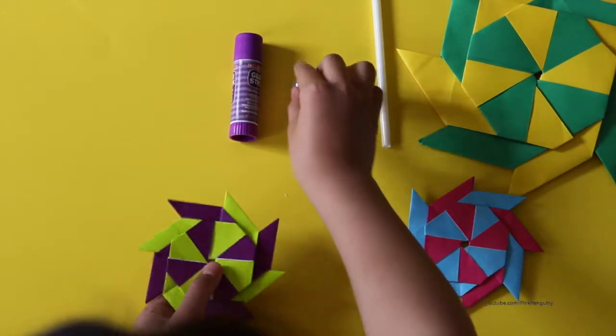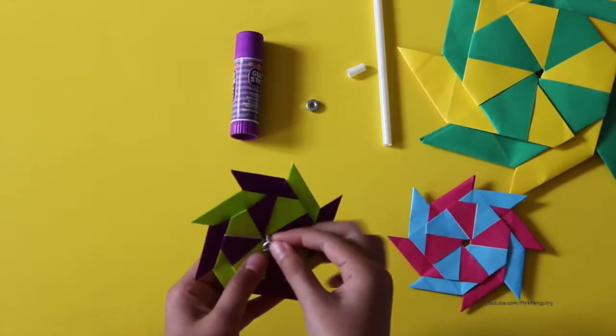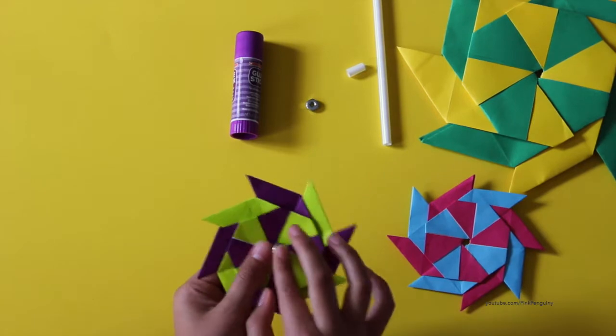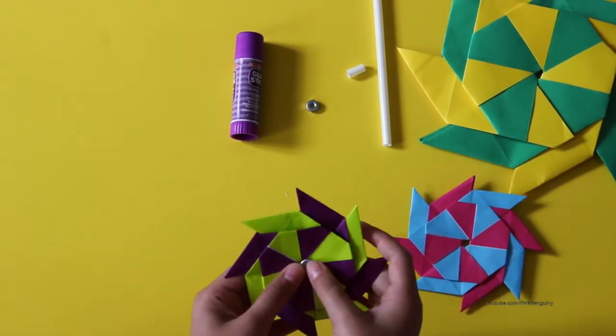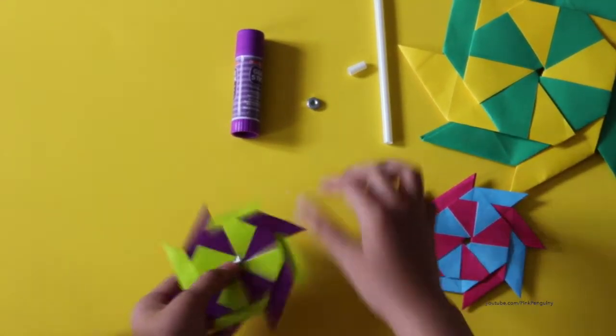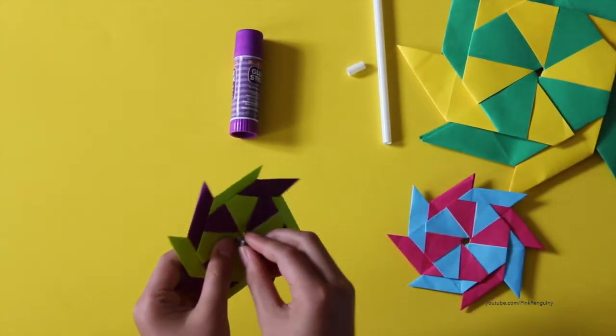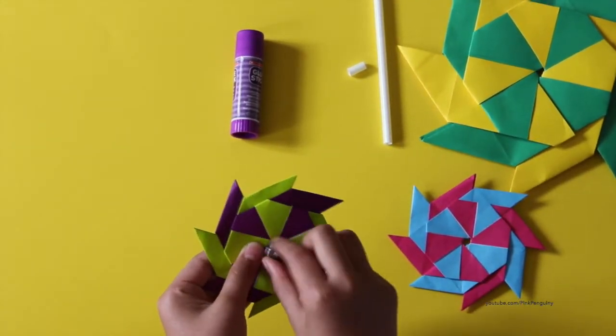So first, you want to sort of secure it. I'm just going to use this so I know the exact size. So when I secure it, I'm going to glue it so it doesn't move, because the ninja star can open and close, but we don't want it to open.